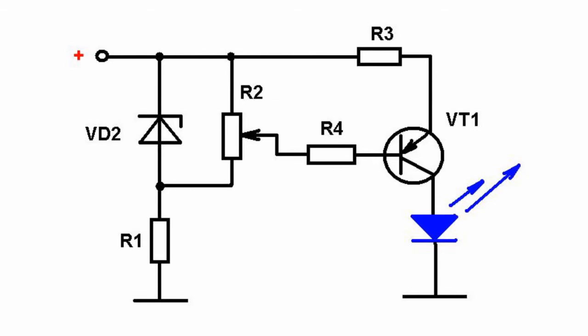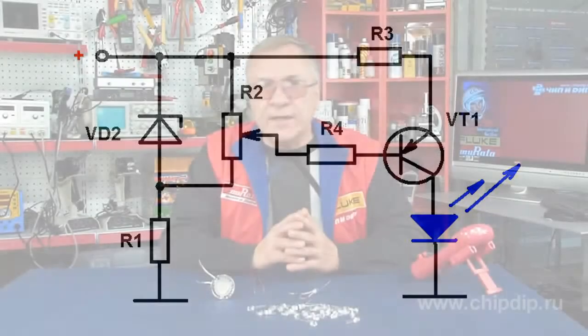Resistor R3 limits the current flowing through the LED. You can set the required LED brightness by adjusting the potentiometer.